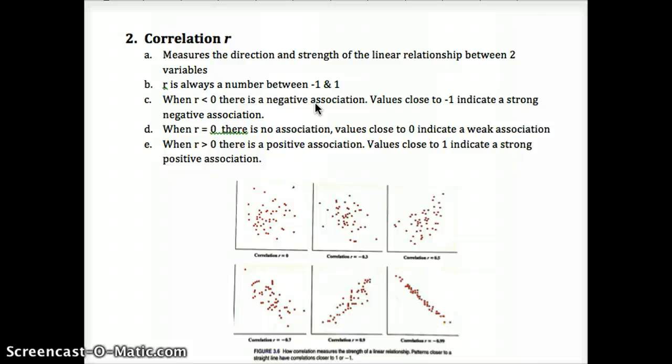When r is less than 0, it's negative association - that would be an inverse relationship. Values close to negative 1 make it stronger. Values closer to 0 make it a weaker relationship. I'll go ahead and define what is strong and what is weak as we go into class. When r is 0, there's no association. When r is greater than 0, there's a positive association. As it gets closer to 1, there's a stronger positive association or correlation.